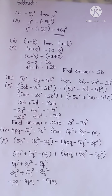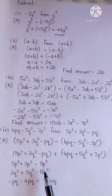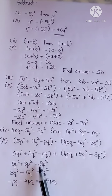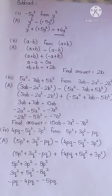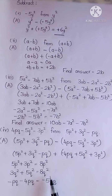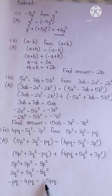Now you can see I have combined the like terms and applied the rule of addition. 5 plus 3 equals 8, 3 plus 5 equals 8, minus 1 minus 4 equals minus 5. So the final answer is 8p square plus 8q square minus 5pq.